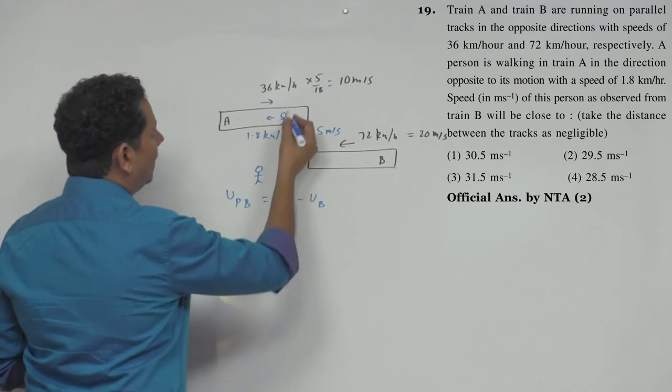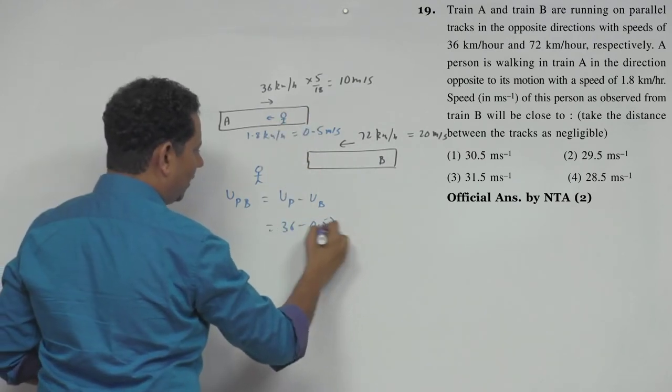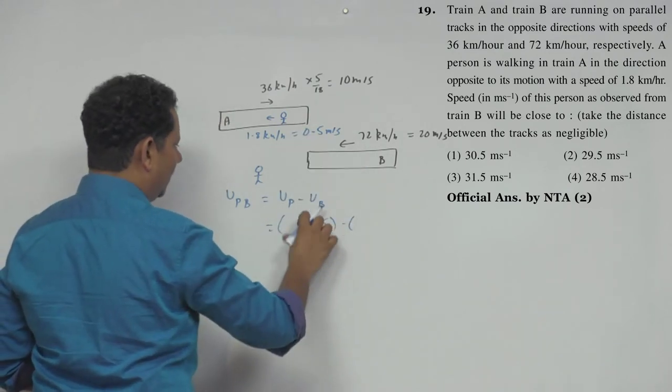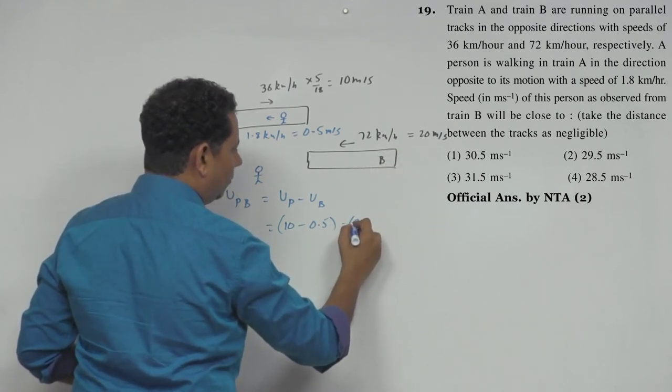The velocity will be... instead of 36, we'll use 10. So 10 minus 0.5, then minus (-20).